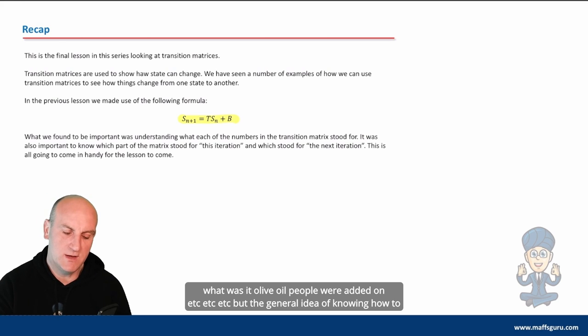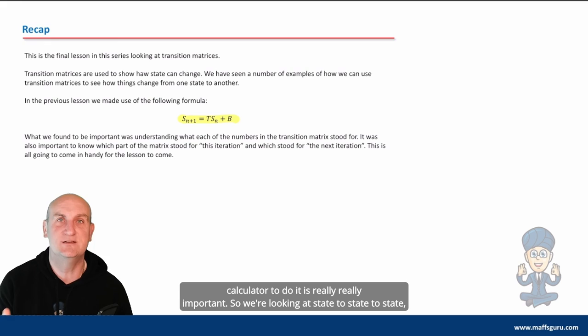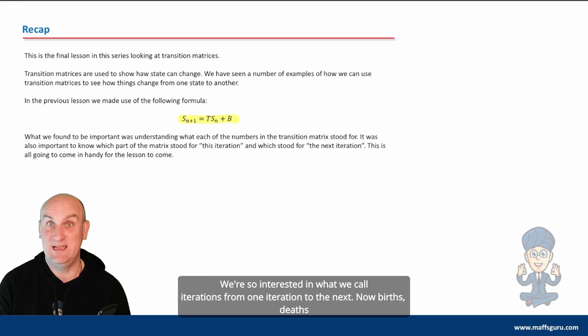But the general idea of knowing how to not only understand what this recurrence relationship means, but able to use your calculator to do it is really important. So, we're looking at state to state to state, realizing that things rarely stay the same. We're interested in what we call iterations, from one iteration to the next.